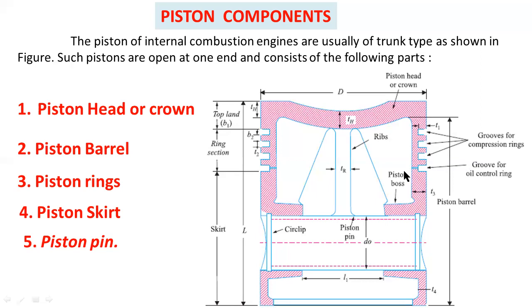Piston rings are used to seal the cylinder in order to prevent leakage of gas past the piston. The fourth part is the piston skirt, which acts as a bearing for the side thrust of the connecting rod on the walls of the cylinder. The portion below the piston ring section is called the piston skirt. The ring section contains oil rings and compression rings.